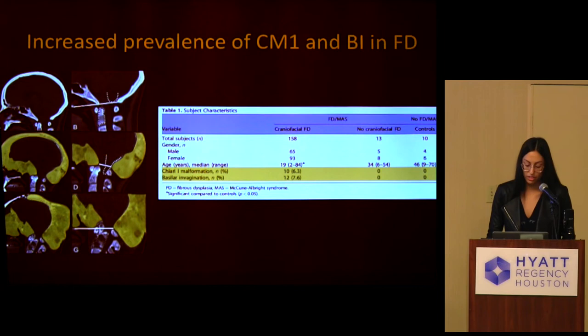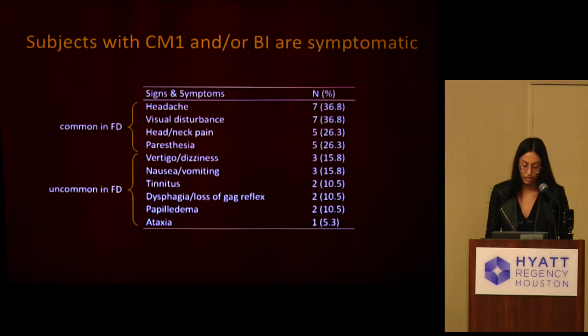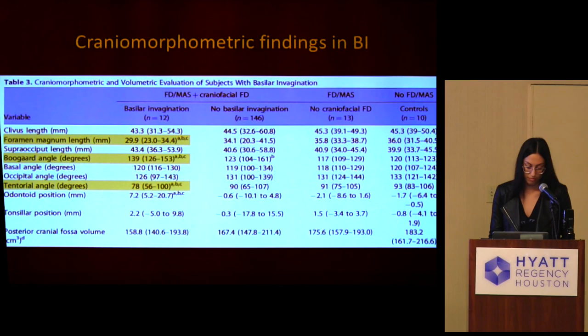We found an increased prevalence of both Chiari malformation and basilar invagination in FD — 6.3% and 7.6% respectively. We did not find either abnormality in patients who had FD but no craniofacial involvement, or in our normal controls. It's important to note that these patients were symptomatic. Patients with craniofacial FD often complain of many symptoms that could be due to FD, but there were also signs and symptoms uncommonly reported in FD that were less likely to be due to their FD alone.